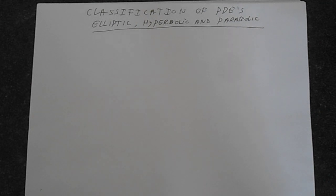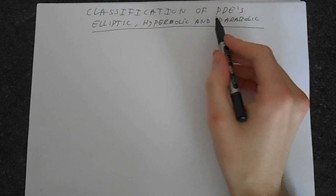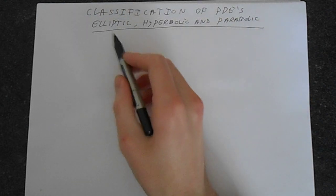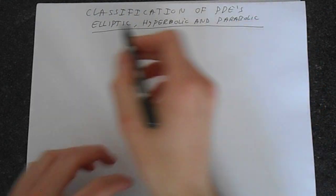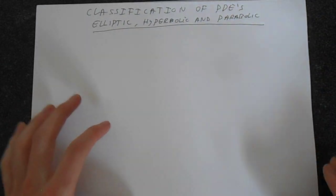In this video we're going to look at how you can classify PDEs or partial differential equations into elliptic, hyperbolic and parabolic. And these have associated properties with them that tell you quite a lot about the PDE. So it's important to know what PDE you're dealing with.